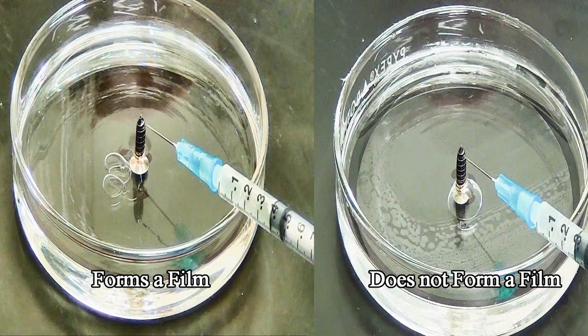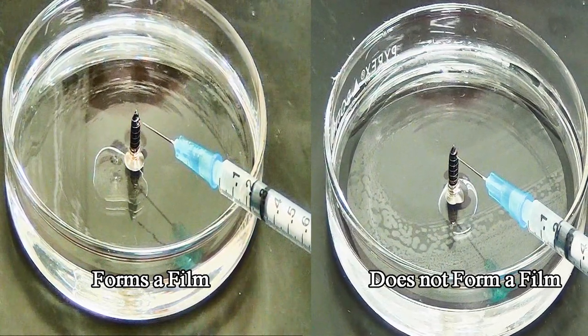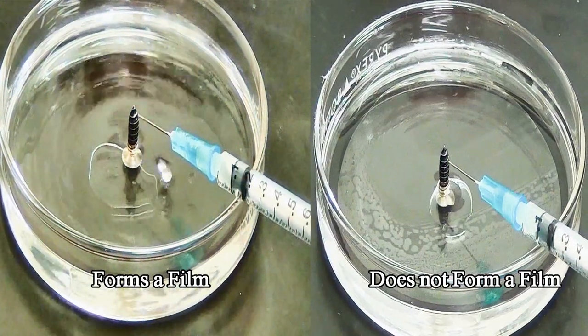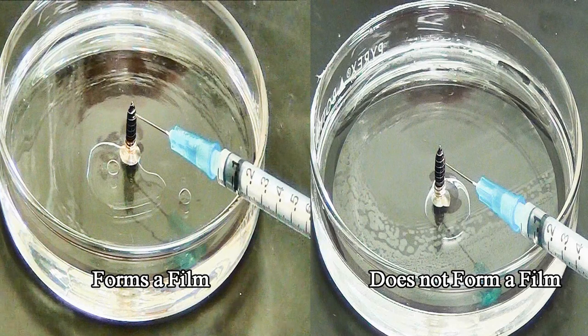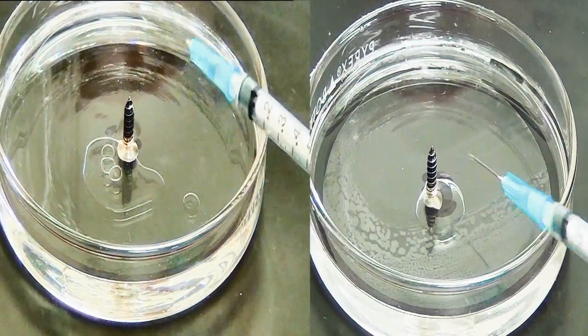In this demo, the fuel is cyclohexane and the screw is used to slowly disperse the foam solution. On the left, the foam solution forms a film, spreading from left to right across the dish very quickly, forming a barrier that protects the fuel from ignition. On the right, the foam solution does not form this film and leaves the fuel exposed.